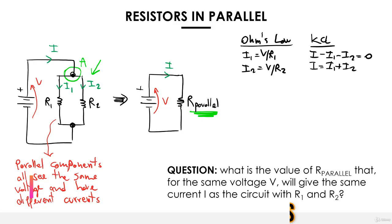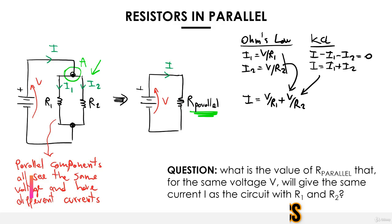Now the equation of i is a function of i1 and i2, but i1 and i2 are defined by Ohm's law. So we rewrite the same thing, substituting the expressions: i equals v divided by r1 plus v divided by r2. We have taken these two equations and combined them into one.